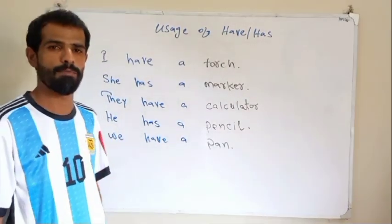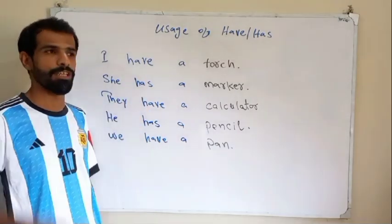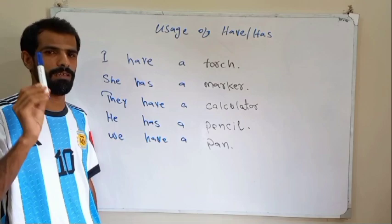Now I move towards the second sentence which is she has a marker. She, it means a girl has a marker like this, she has a marker.